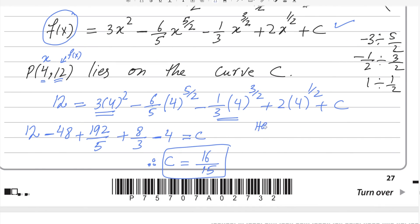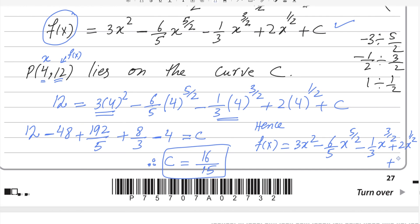Substituting c equals 16/15, the final answer is f(x) equals 3x² minus (6/5)x^(5/2) minus (1/3)x^(3/2) plus 2x^(1/2) plus 16/15. This is the complete answer for question number 10. Hopefully you understand it — if you have any questions or doubts, please write in the comment box. Thank you.